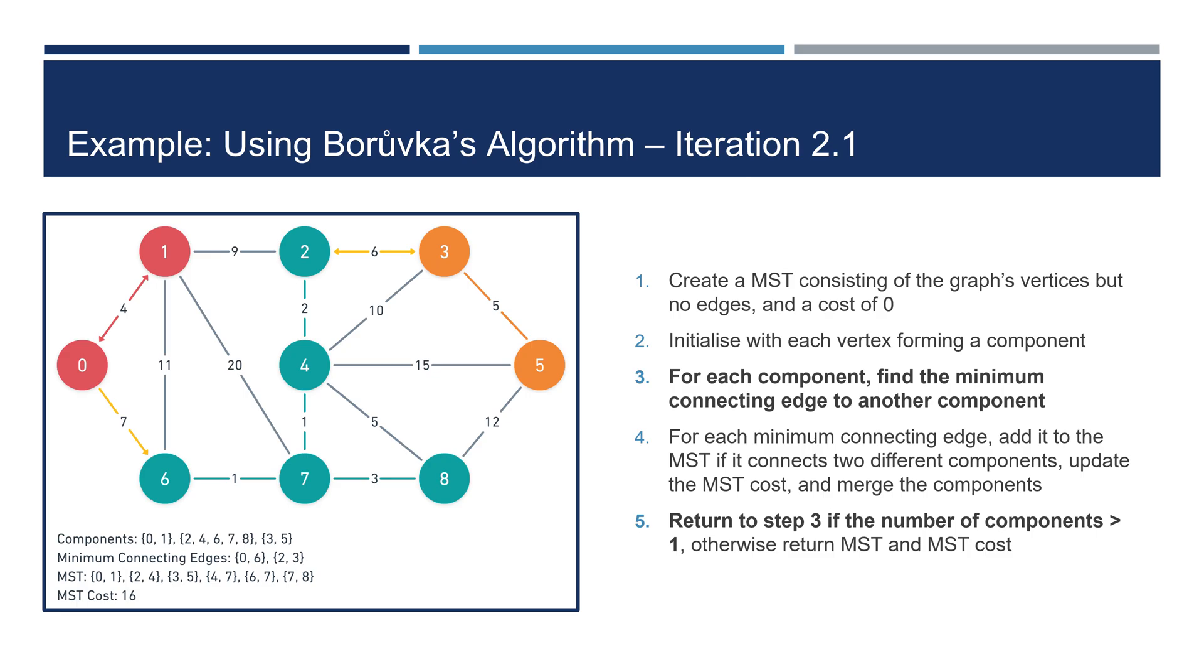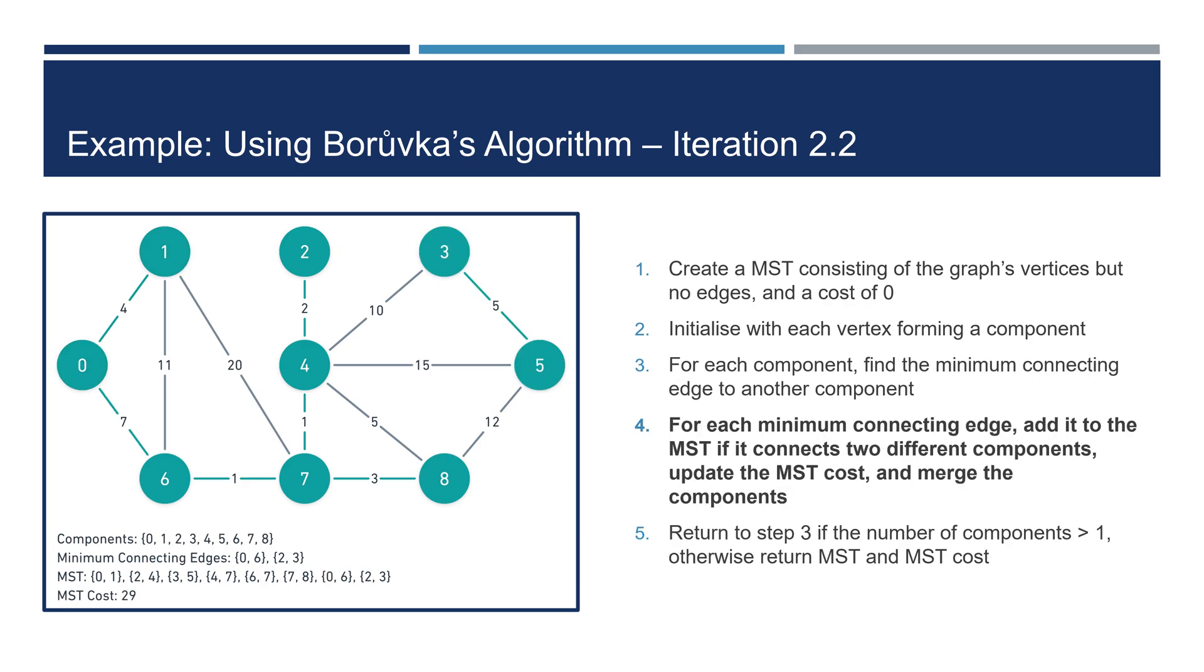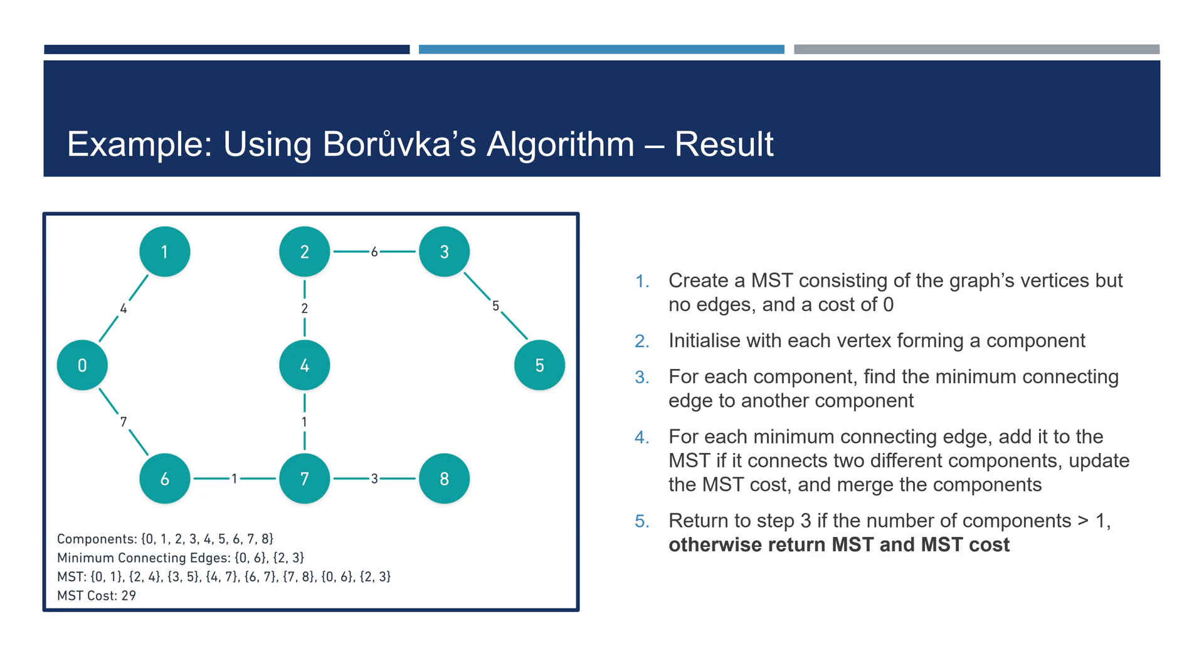We iterate again as there are still multiple components. This results in two minimum connecting edges. The red component finds the edge between node 0 and node 6, and the green and orange components both find the edge between node 2 and node 3. We add each edge that connects two different components to the MST and update its cost. Then, we merge the smaller component into the larger component, resulting in the red and orange components merging into the green component. We are left with only one component, so we stop iterating.